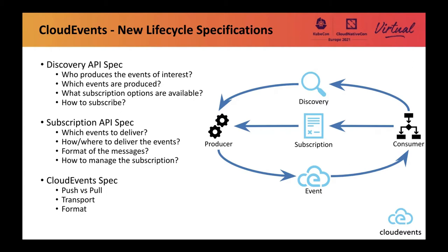So what we're going to be doing is working on a discovery API spec, and that's going to allow producers to advertise that they're out there and what events people can subscribe to. A consumer will then hit a discovery endpoint, find out what events are out there, who produces them, how they can be delivered, different transfer protocols, what subscription options are available, whether they support filtering, and how to actually subscribe.